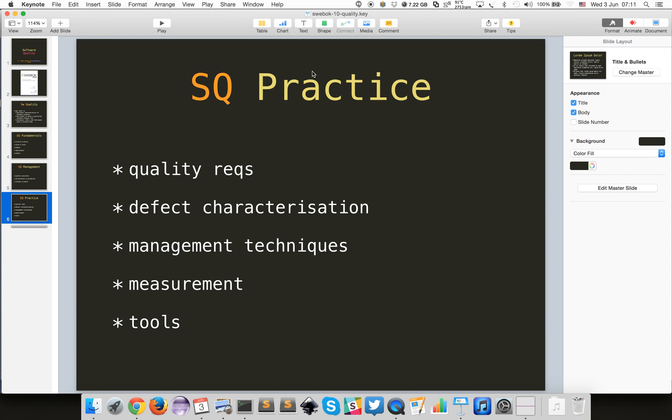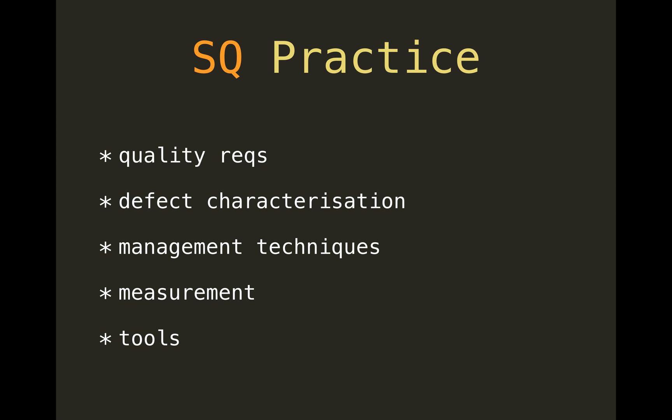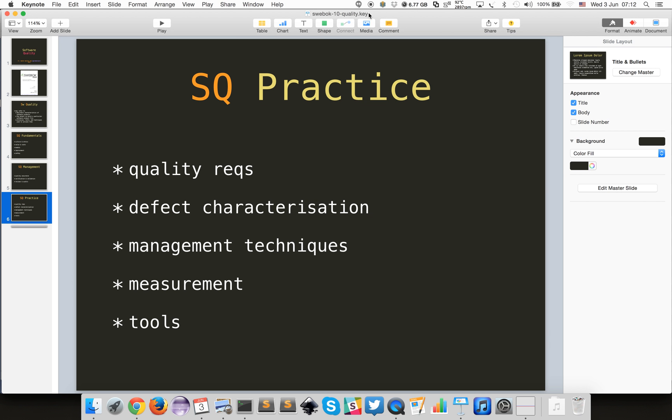Measurement is about descriptive statistics — something like scatter plots — statistical tests like binomial tests or chi-squared, trend analysis like control charts, and prediction models like reliability models. And of course, there are many tools that assess and ensure the quality of your software.